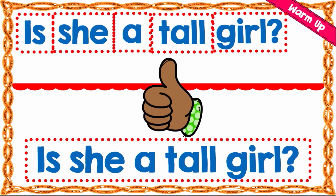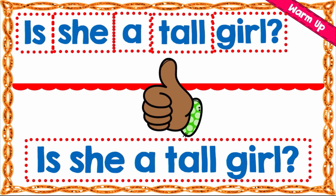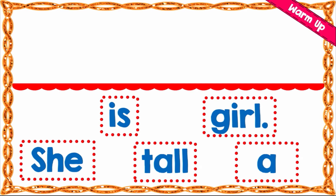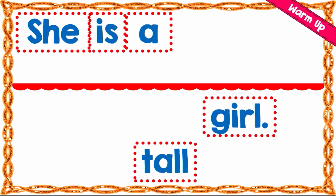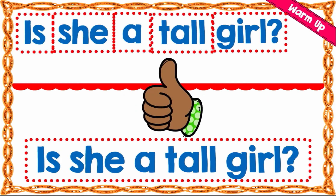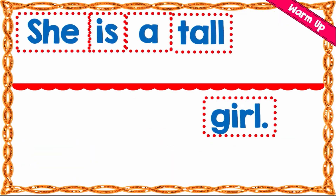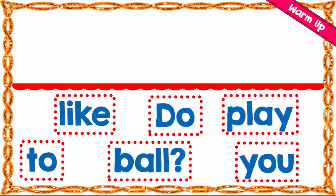'Is she a tall girl?' — this sentence has been unscrambled. Before it was worked, it was scrambled; now it is orderly arranged. We also have: 'She is a tall girl.' You see there are two ways to unscramble the words — it depends on your punctuation. One ends with a question mark, the other ends with a period mark.